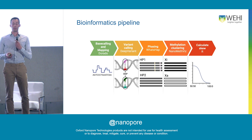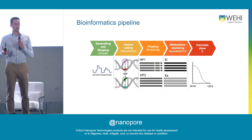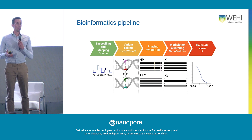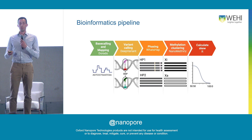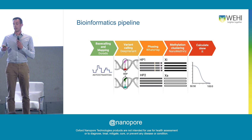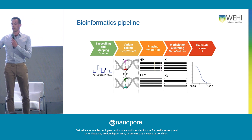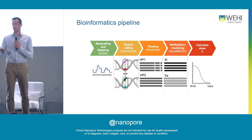Our bioinformatics pipeline has five steps: first, base call; second, call variants; third, phase those variants; fourth, look at reads and examine their methylation pattern; and fifth, cluster them. You usually end up with a cluster of highly methylated reads and lowly methylated reads, and you tally this with haplotype information to calculate the skew.